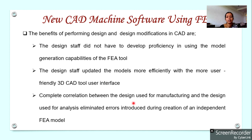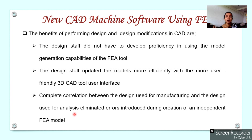Another benefit is complete correlation between the design used for manufacturing and the design used for analysis. We produce the CAD design for manufacturing, and that component is physically manufactured based on the CAD drawing. If we were to analyze the machine using a separate model generated by FEA, there may be errors. By exporting the CAD model into FEA, we have complete correlation — the same model is used for both manufacturing and analysis.